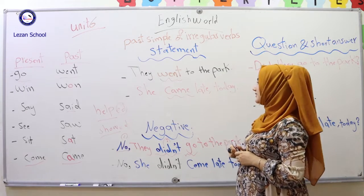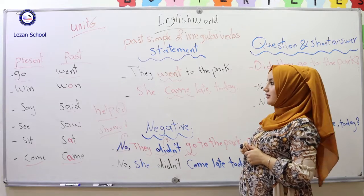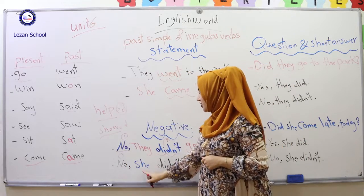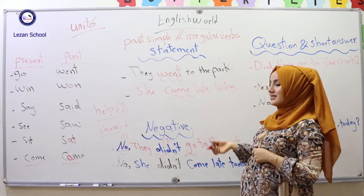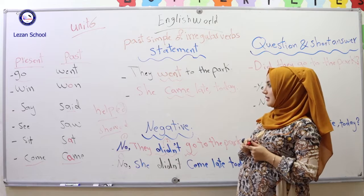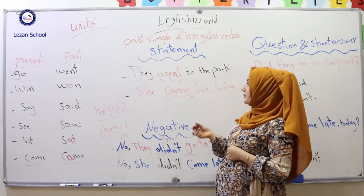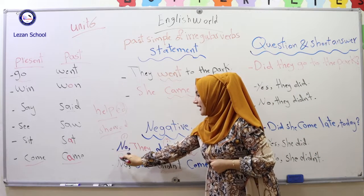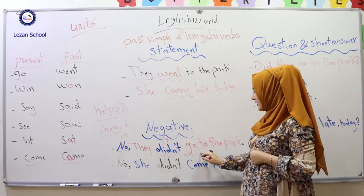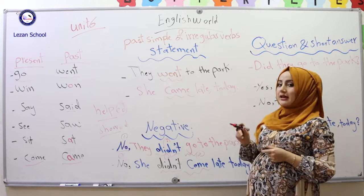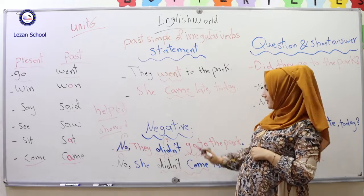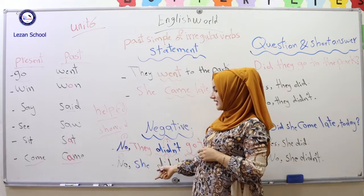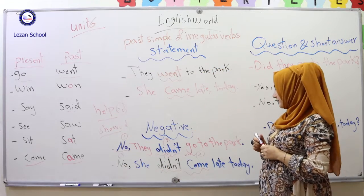For the second sentence, 'She came late today' — if I want to change it to negative: step one, add 'No'; step two, after writing the subject 'she,' we write 'didn't' because the sentence is in past form; step three, write the present form of 'came,' which is 'come.' So: 'No, she did not come late today.'